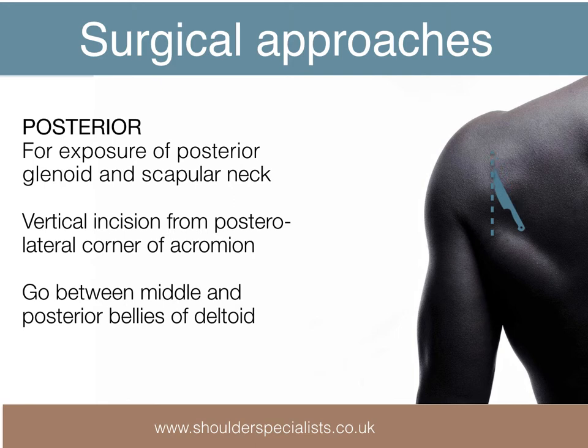The posterior approach to the shoulder is used for access to the posterior glenoid, labrum and scapular neck — for example when treating posterior instability or fractures. A vertical incision is made from the posterolateral corner of the acromion inferiorly. The exposure is continued between the middle and posterior bellies of the deltoid.